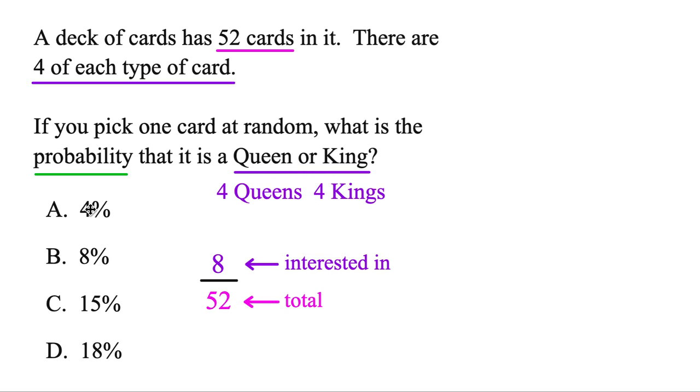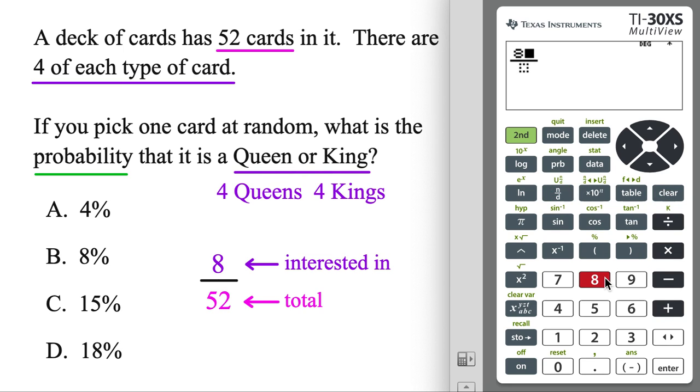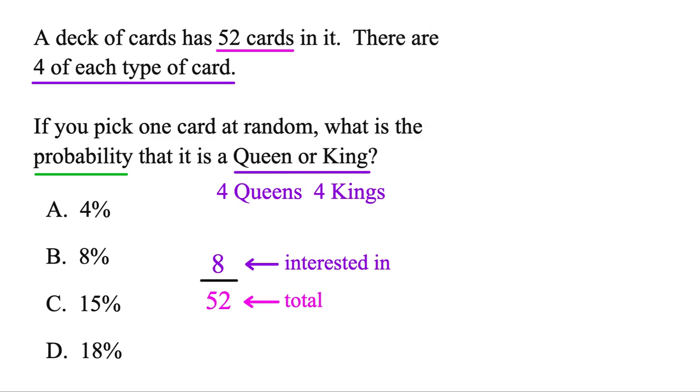So finally, we're going to be able to convert it to a percent. Once again, just plug this into the calculator. We'll go ahead and use the fraction. So 8 over 52, enter. But this time, use the button right above enter. That'll convert it to a percent. And slide that decimal two places to the right. So same thing as 15.3%. So 15%, and that's the probability of getting a queen or a king from this random deck of cards.